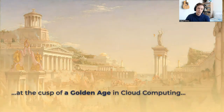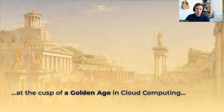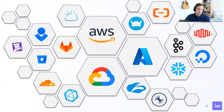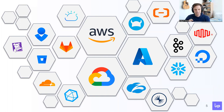I would argue that we're at the cusp of a golden age in cloud computing. Now more than ever, organizations have a wealth of options to choose from to build your services on top of, to accelerate your time to market, and to operate your software on a global stage. We're not just talking about the big three public cloud providers — AWS, Azure, and GCP — but also things like Cloudflare, Snowflake, Okta, Datadog, DigitalOcean. You could fill many slides with these different icons for companies providing cloud services.